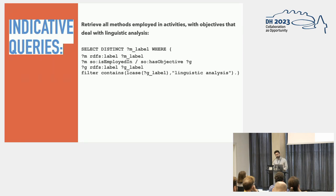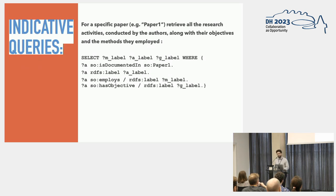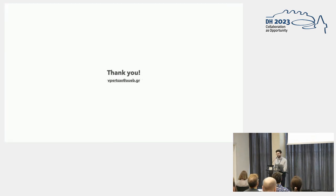To conclude, here are two indicative SPARQL queries to demonstrate the use of such knowledge graphs. First, we can retrieve all methods employed in activities with objectives related to linguistic analysis — filtering all objectives whose label contains the words 'linguistic analysis'. Second, in a more complex example, a paper can be entirely recomposed in terms of the activities conducted by the authors, along with their objectives and the methods they employed. That would be all — thank you very much.